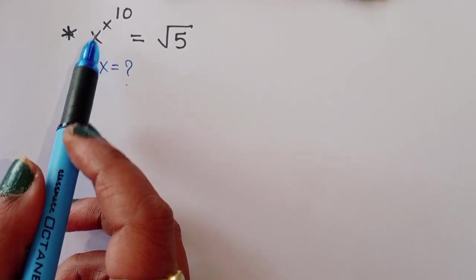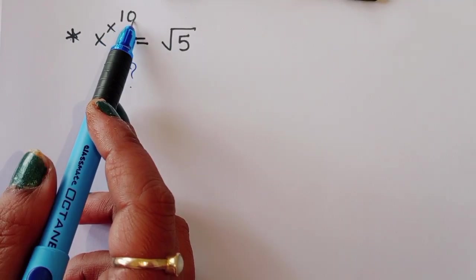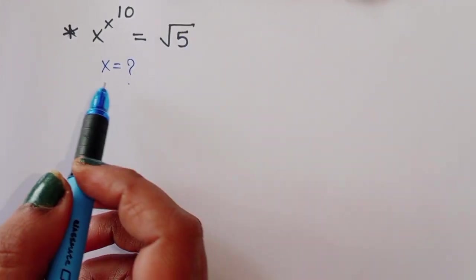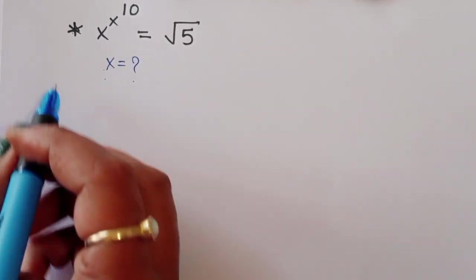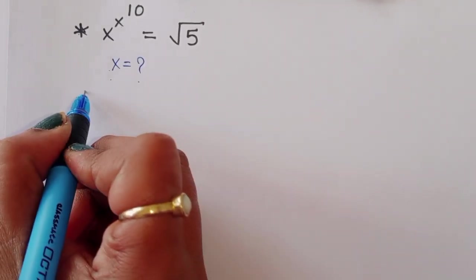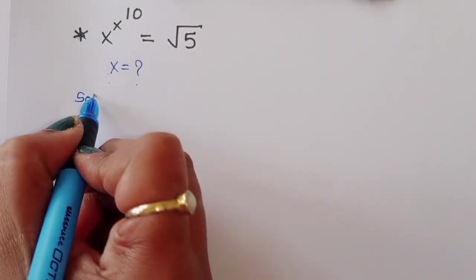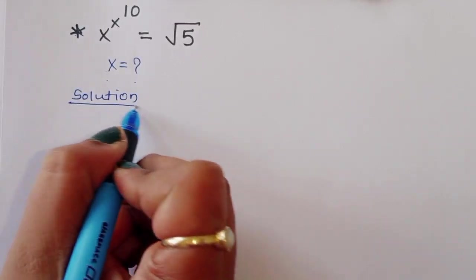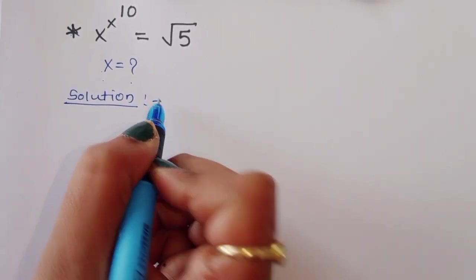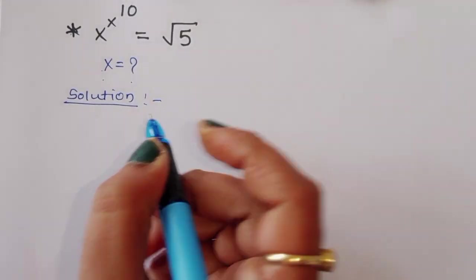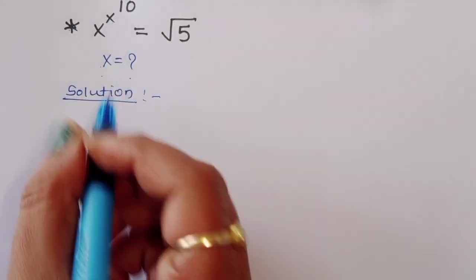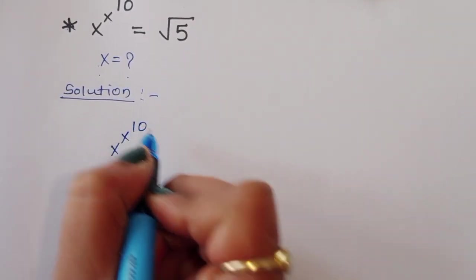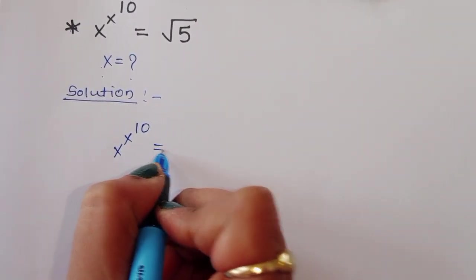The solution is given: x raised to x raised to the power 10 is equal to the square root of 5. We have to find out the value of x. Let's start the solution.